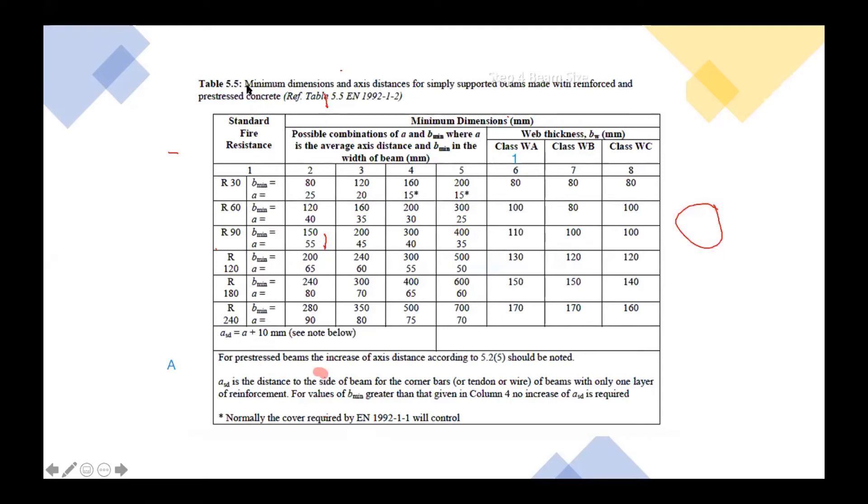However, besides the control deflection, Eurocode also provide us as a guidance. They put this table, table 5.5. It is minimum dimension and axis distances for simply supported beams. This is simply supported beams. Actually, we have another table in the book. But now, let's say we design for the simply supported beams.